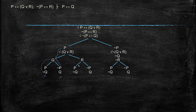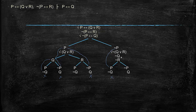Continuing to check: not-Q with P — there's P and not-P, close. Q and not-Q — close. After closing all those branches, there's only one remaining open branch. That's actually quite nice — it cleans up so that we only need to apply the remaining formula to one branch.